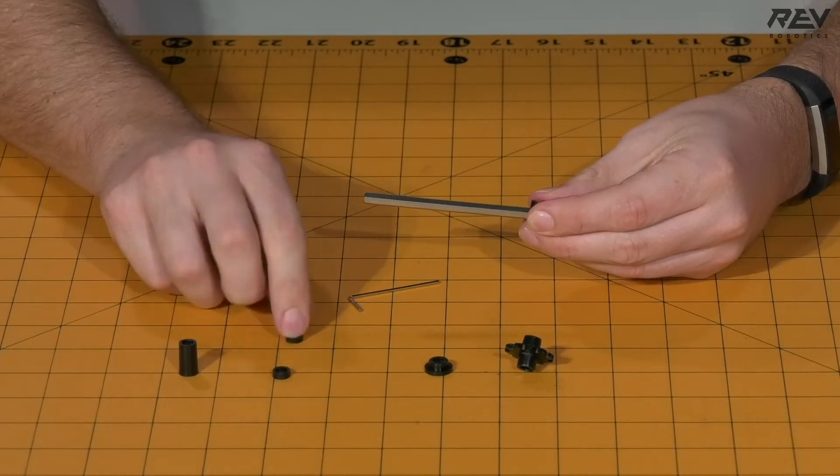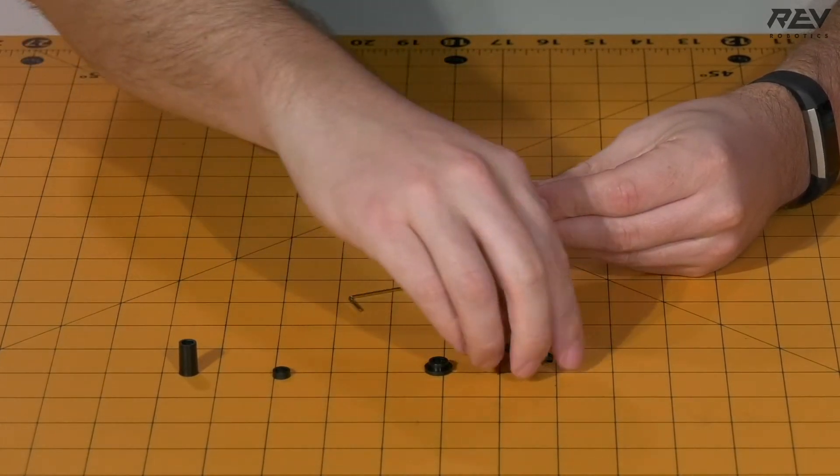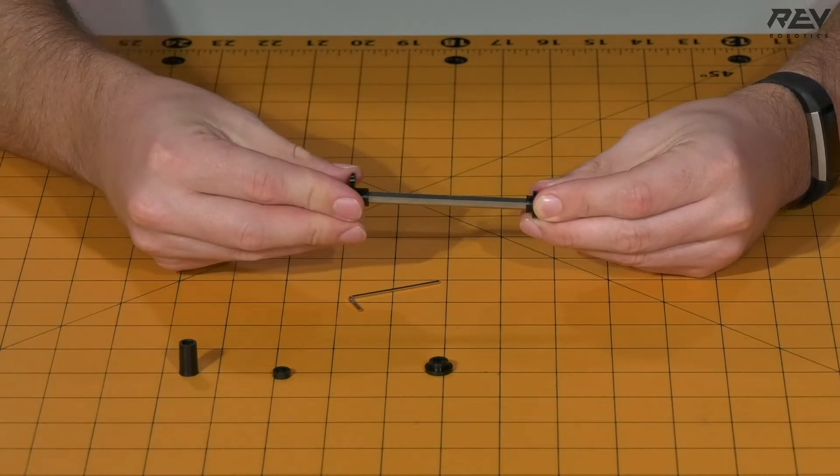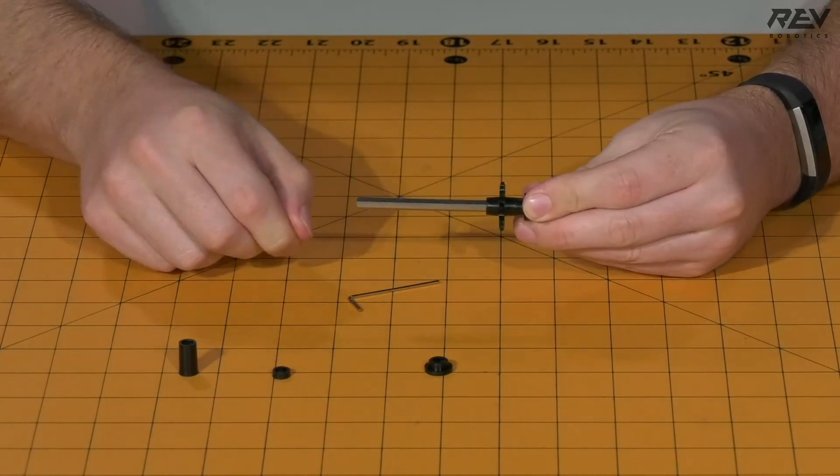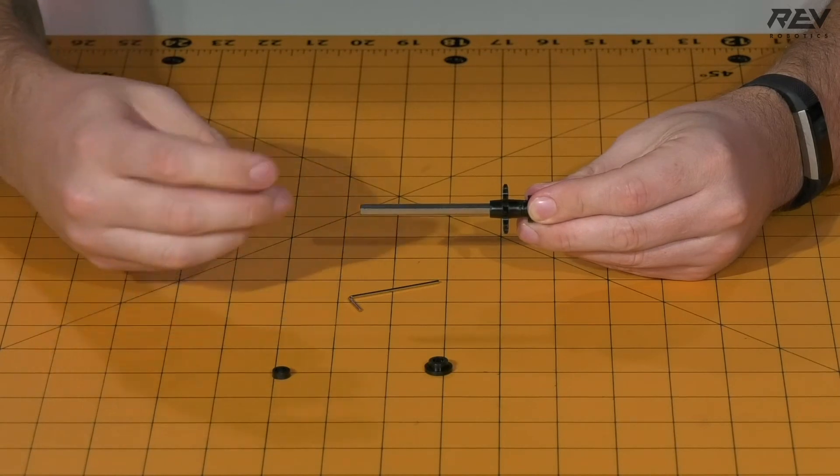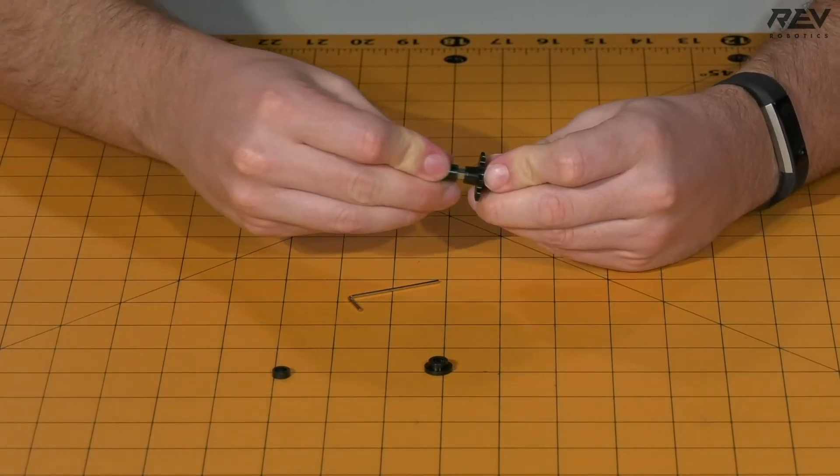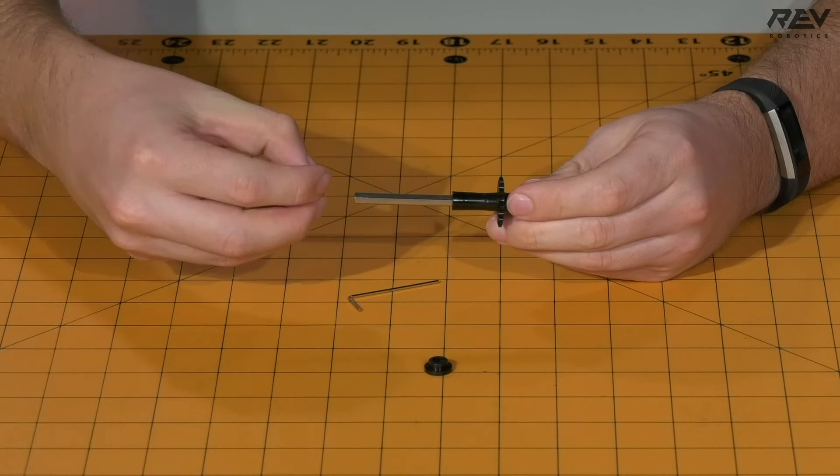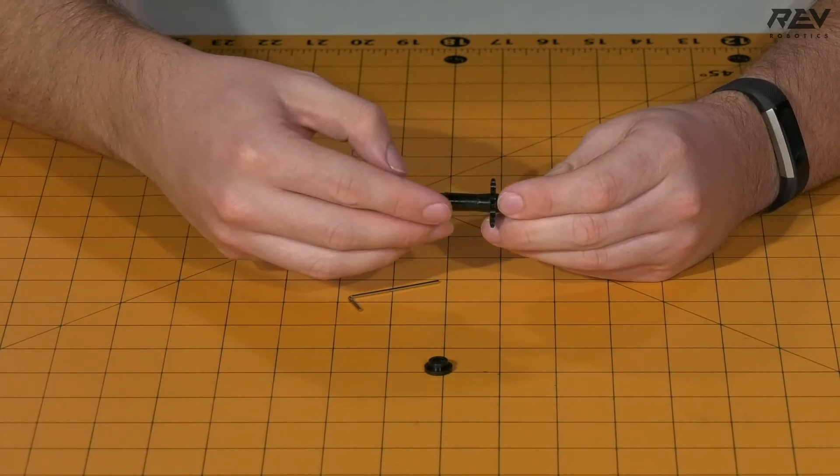After that is done, take a 3 millimeter spacer followed by your 10 tooth sprocket. Once the 10 tooth sprocket is on, take the 15 millimeter spacer, place that on, followed by another 3 millimeter spacer.